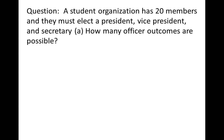Our next example: a student organization has 20 members and they're going to select officers — a president, a vice president, and a secretary. How many different outcomes are possible? We need to know which three people are officers, but that's not enough — the same three people holding different offices is a different outcome. For example, Larry, Curley, and Moe as president, vice president, and secretary respectively is very different than if Moe were president, Curley vice president, and Larry secretary. We treat those as two different outcomes.